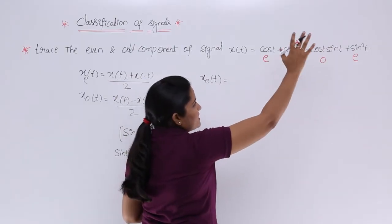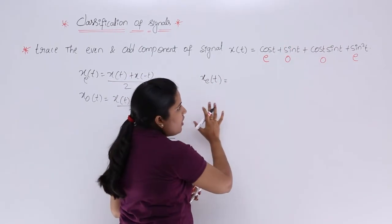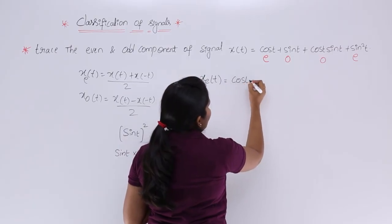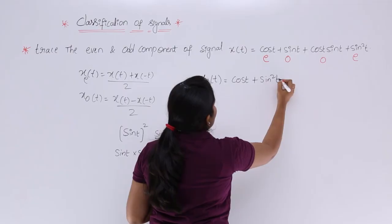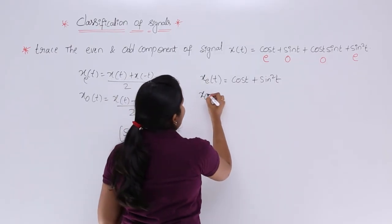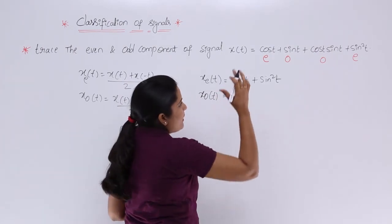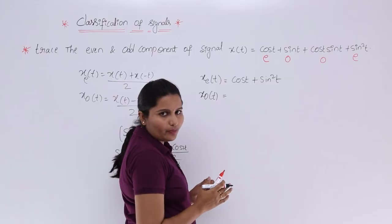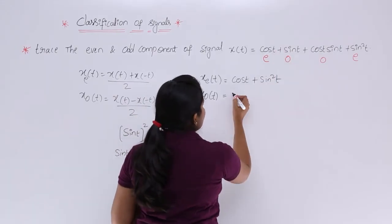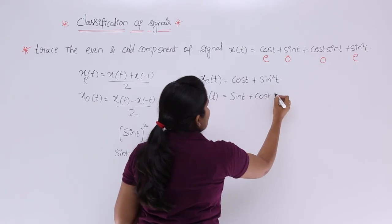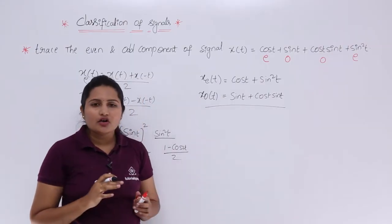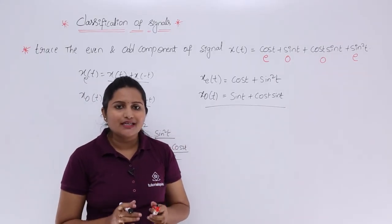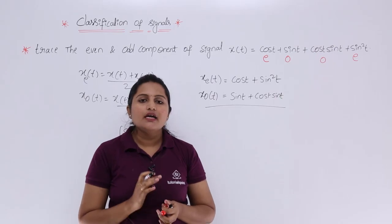Now we know which components in our combination are even and which are odd. Adding all even components gives the even component: xe(t) = cos t + sin² t. Adding all odd components gives the odd component: xo(t) = sin t + cos t · sin t. This way we calculated the even and odd components of x(t) without applying the standard formulas directly.